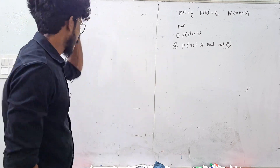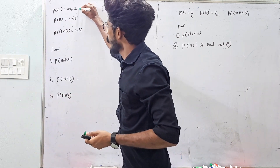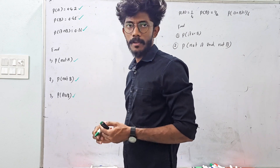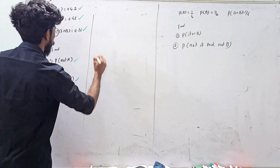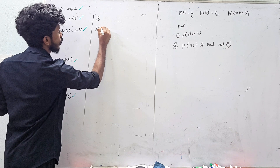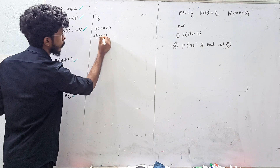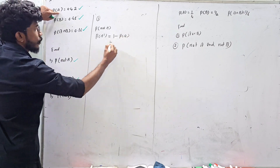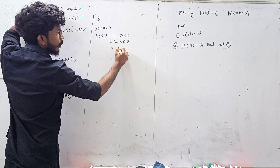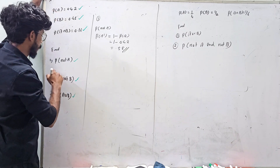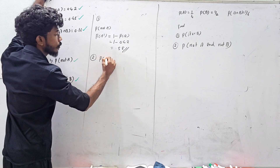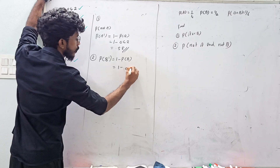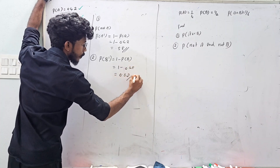Now we have two questions. The first question: given probability of A, probability of B, and probability of A intersection B. Find probability of not A and probability of not B. Probability of not A equals 1 minus P(A) equals 1 minus 0.42, that is 0.58. Probability of not B equals 1 minus P(B) equals 1 minus 0.48, answer is 0.52.